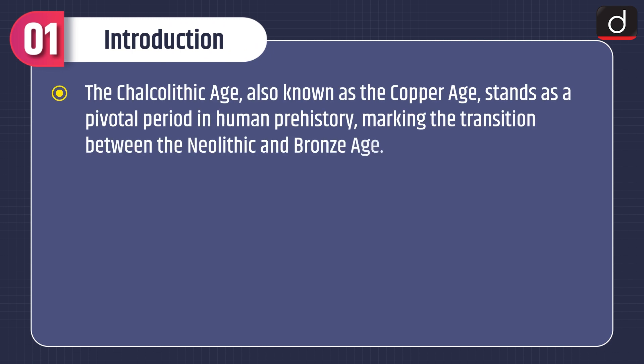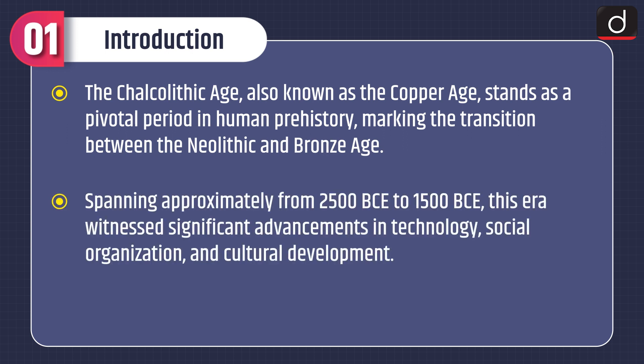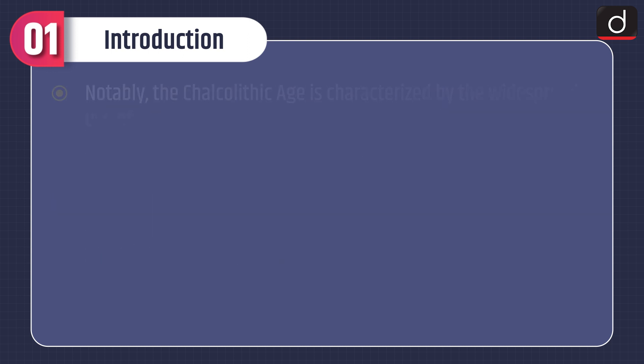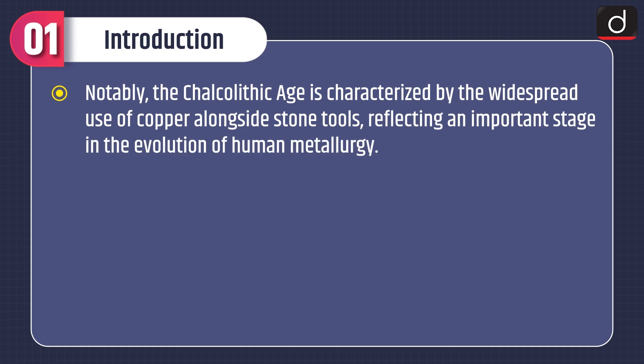Moving on to the introduction, the Chalcolithic Age, also known as the Copper Age, stands as a pivotal period in human prehistory, marking the transition between the Neolithic and Bronze Age. Spanning approximately from 2500 BCE to 1500 BCE, this era witnessed significant advancements in technology, social organization, and cultural development. Notably, it is characterized by the widespread use of copper alongside stone tools, reflecting an important stage in the evolution of human metallurgy.